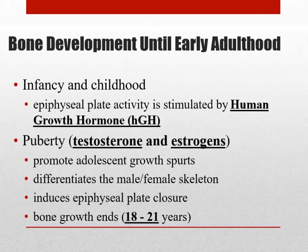The shape of the skeleton will be dependent on testosterone and estrogens, which give a more male or female skeleton. There are classic differences at the pelvis and the size of bones like the scapula. Both males and females produce these hormones — just in lesser amounts. A male will produce estrogens, but to a much lesser extent. Females produce small amounts of testosterone as well, just in lesser populations in the bloodstream.